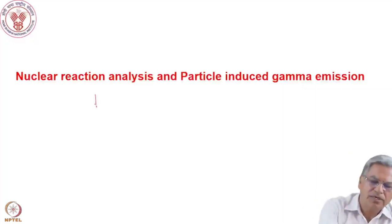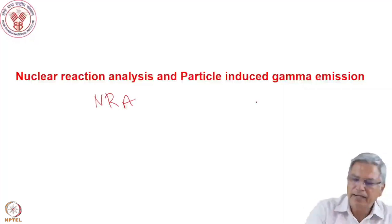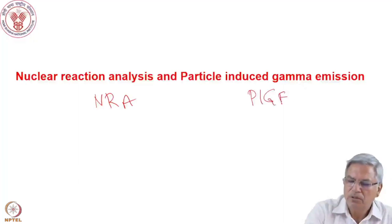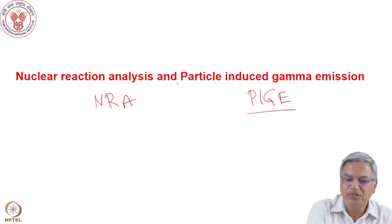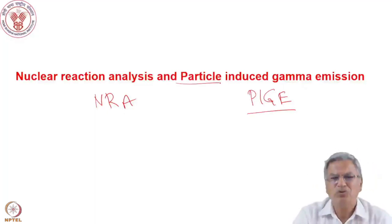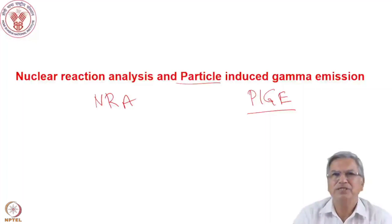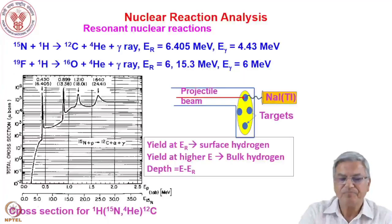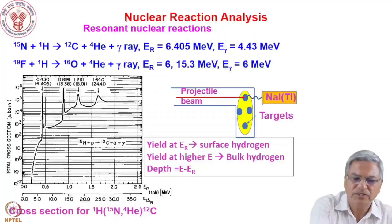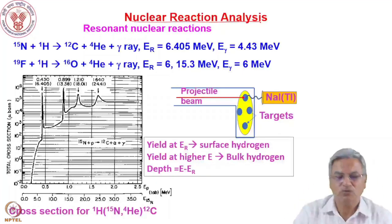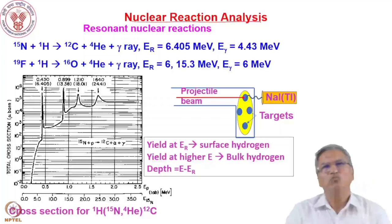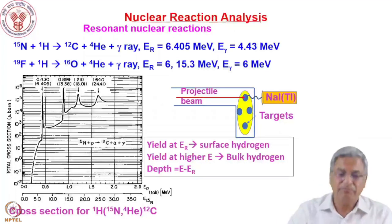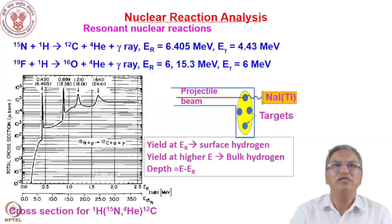These are called nuclear reaction analysis, NRA, and particle induced gamma emission, PIGE. In PIGE, mostly protons are used as the projectile, so it can also be called proton induced gamma emission, though deuterium and other beams can also be used. The NRA techniques I am discussing are based on resonances in the nuclear reaction cross-section.